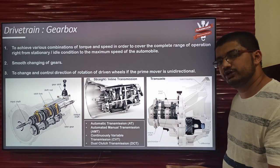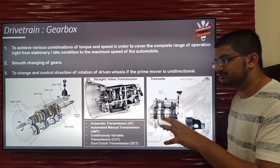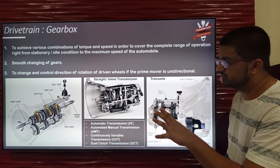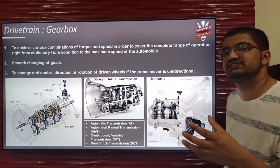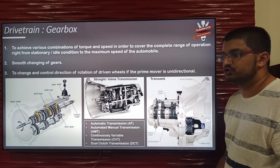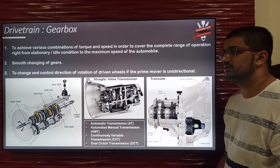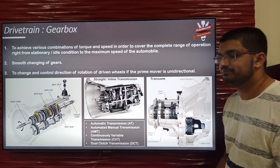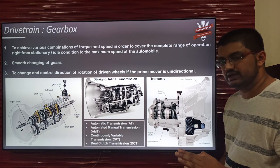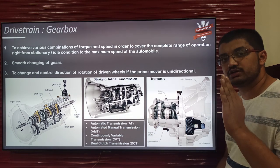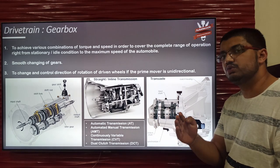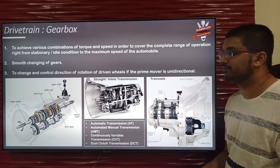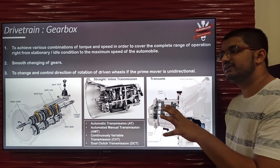Various gear ratios present in a transmission are used to achieve different set points of torque and speed. There are different demands of torque and speed during different running conditions. If a vehicle is in stall condition and wants to start, it needs high torque. If the vehicle is cruising and needs to increase speed, it needs more speed but less torque as the vehicle is already in inertia. This is achieved by different gear ratios.